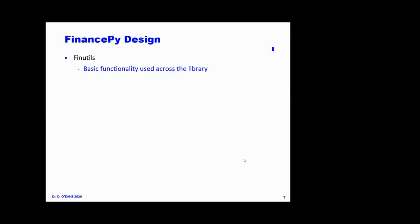So what is the design of FinancePy? I've used quite a lot of finance libraries over my time, and this has influenced how I designed FinancePy. The library is broken down into four main categories. First is FinUtils — helper functions used across the library. Second is the market inputs. Third are models. And fourth are products.